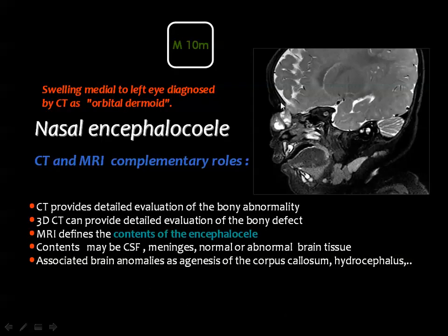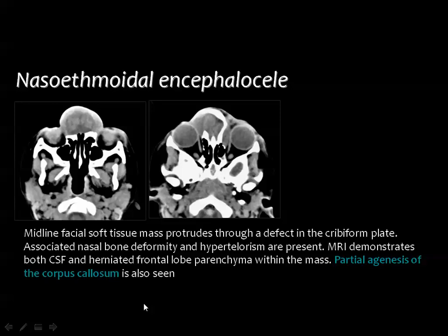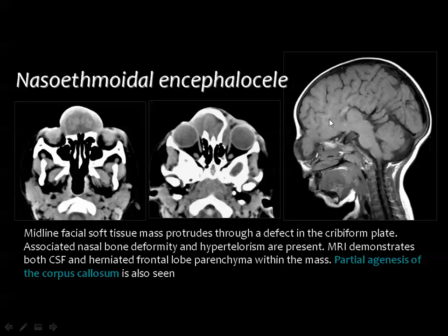This nasal encephalocele contains not only CSF but also brain tissue. CT may not demonstrate the brain tissue as well. On MRI sagittal T1 and T2 images, a large encephalocele in the nasal-frontal area shows protrusion of disorganized brain tissue and fluid. By CT, you can appreciate the protrusion and identify brain tissue contents. On MRI, you can see that the brain itself is herniating along with CSF and the dural sac.